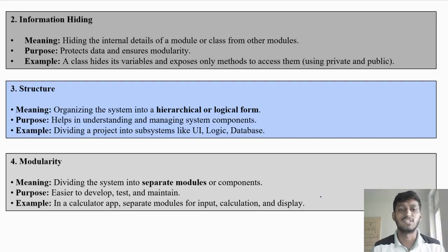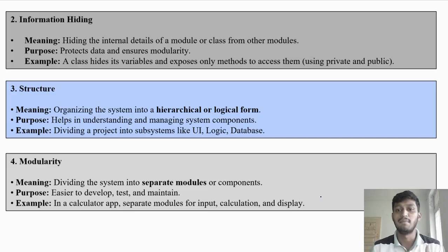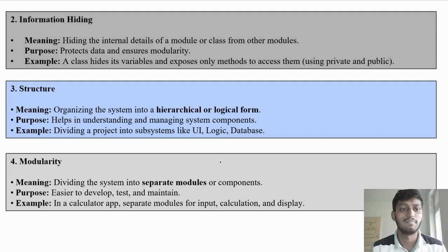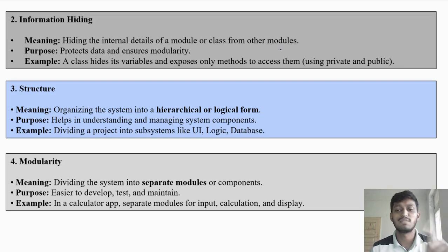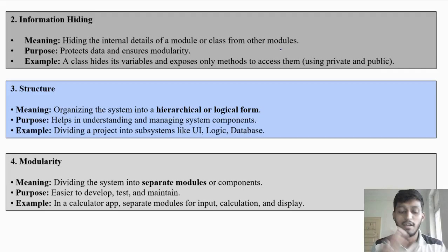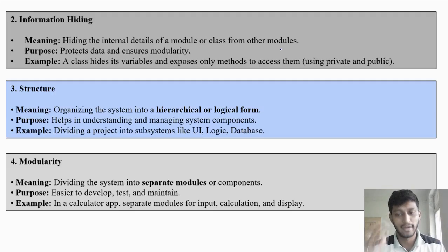Next is information hiding. In C++, you use private, public, and protected access modifiers. The meaning is hiding the internal details of a module or class from other modules. In a class, you have public member functions and member variables — make them private, public, or protected. One module's data should be hidden from other modules, meaning other classes.